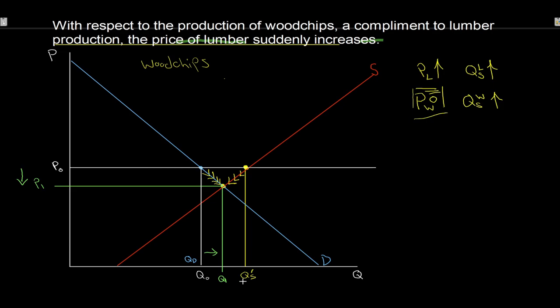Of course, we could work through this in the completely opposite way. If the price of lumber fell instead, flip all those arrows around and everything goes in the opposite direction - completely symmetric, just opposite. Price would have risen and quantity exchanged would have fallen.